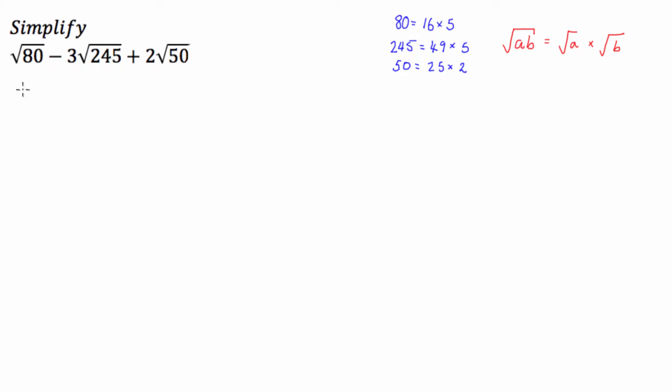So we know the square root of 80, then, is going to be equal to square root of 16 times the square root of 5 minus 3. Now, I'll put this piece in brackets because it'll just make it easy to read. The square root of 49 times the square root of 5 plus 2 times the square root of 25 times the square root of 2.